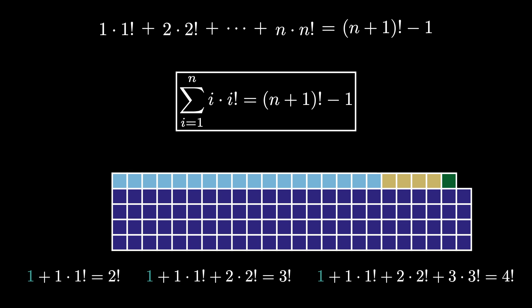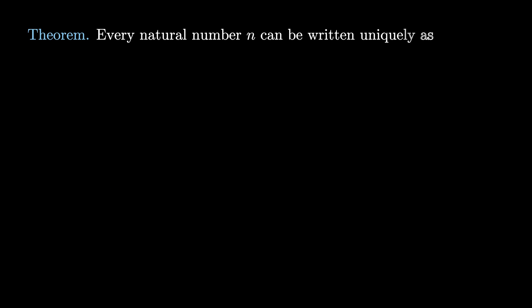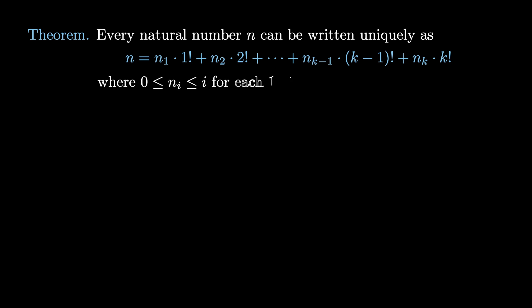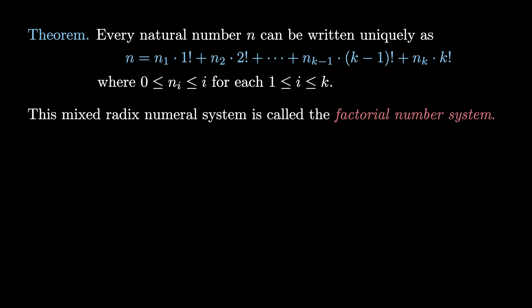While this is an interesting finite sum formula in its own right, we can actually use the formula to produce an interesting number system. It's a theorem that every natural number n can be written uniquely as n equals n1 times 1 factorial plus n2 times 2 factorial, and so on up to nk times k factorial, where we require that each n_i lives between 0 and i inclusive for each i from 1 up to k. This mixed radix numeral system is called the factorial number system.